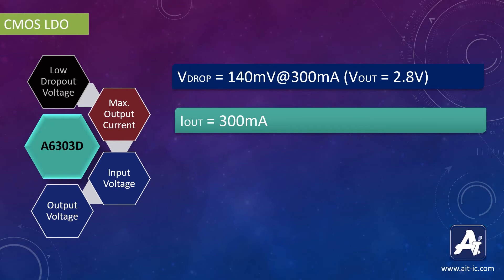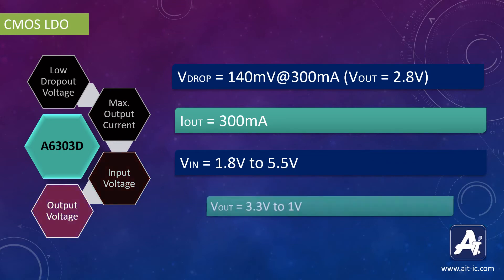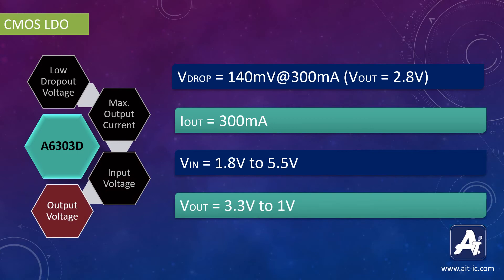It has a wide input voltage range from 1.8V to 5.5V, and the output voltages are available from 3.3V down to 1V. At 1V output, the typical dropout voltage is 450mV.